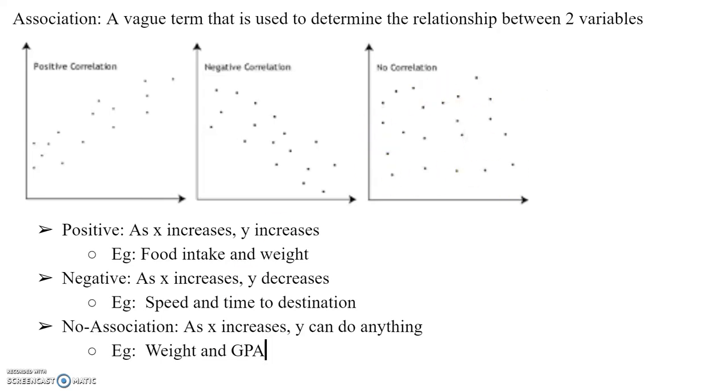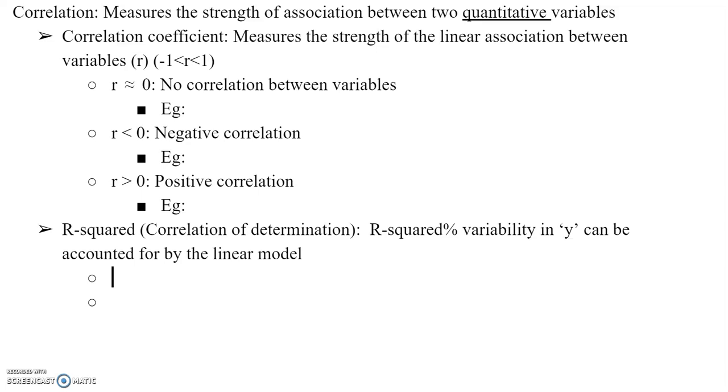The correlation, which is a more precise term, measures the strength of association between two quantitative variables. The key term quantitative is very important, because for correlation we assign values. You can't assign values to categorical or qualitative variables. How do we give it a value? We have this thing called the correlation coefficient, which is the actual value or variable that we assign to measure the strength of a linear association between variables. We refer to it as r, and it has a domain of negative 1 to 1.